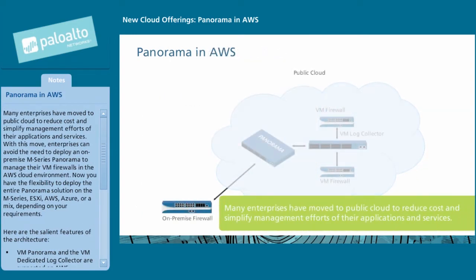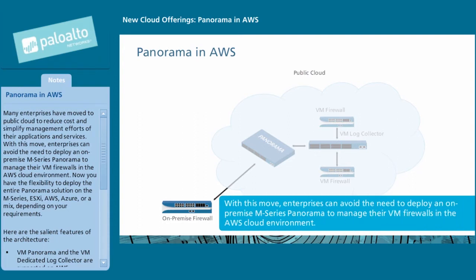Many enterprises have moved to the public cloud to reduce cost and simplify management of their applications and services. With this move, enterprises can avoid the need to deploy an on-premise M-Series Panorama to manage their VM firewalls in the AWS cloud environment.